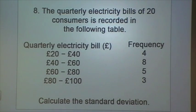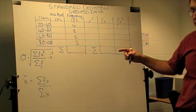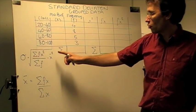The question that we're going to solve is on the whiteboard there. Right, to calculate the standard deviation for grouped data, we use this formula here,